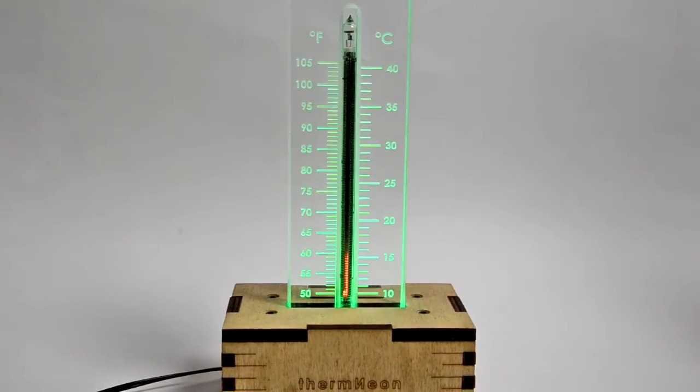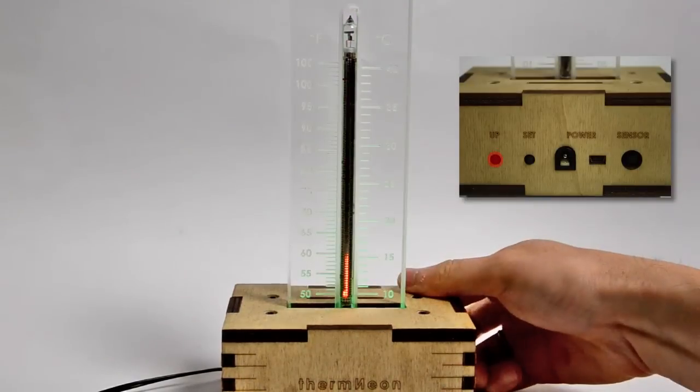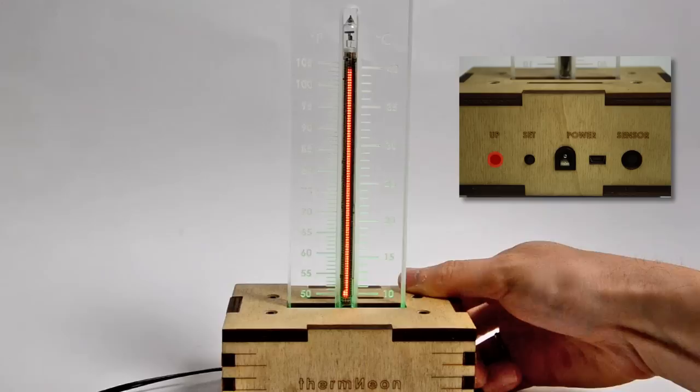Repeat this method to change the other options. When you have finished changing the options, pressing the up button when you are on option 7, 40 degrees, will return to the normal operation of the Thermneon.